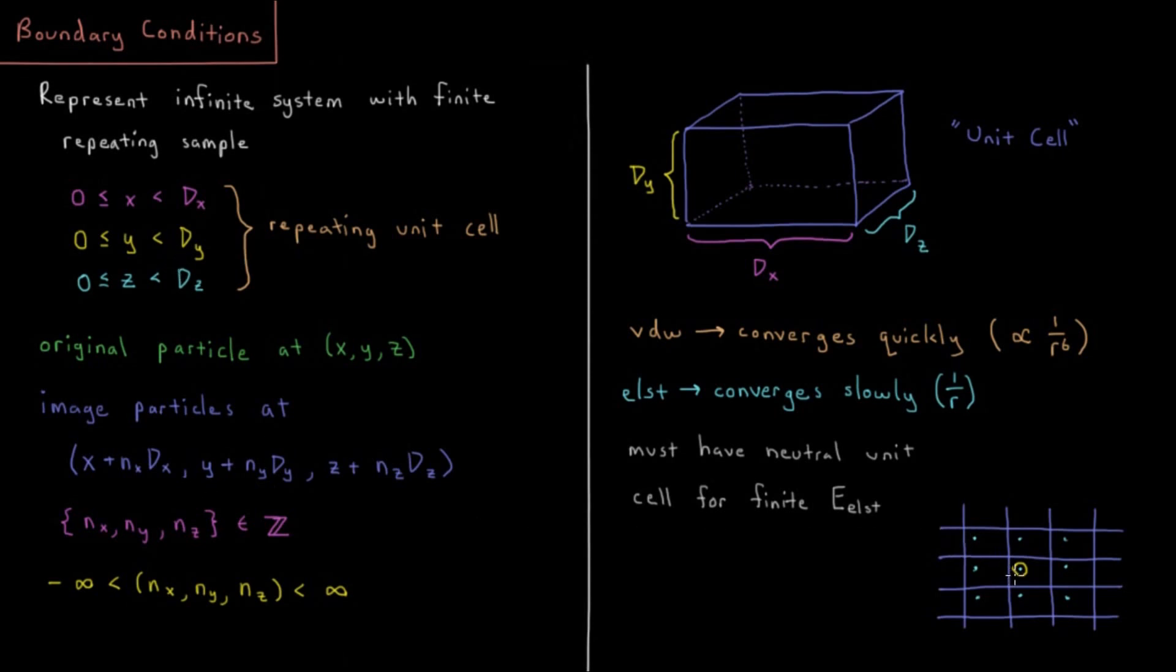So every unit in each direction with these nx, ny, and nz being all integers. So repeating in every direction as far as we can go, at every single integer there's another copy of this original particle where we have images, an infinite number of them, in x, y, and z.